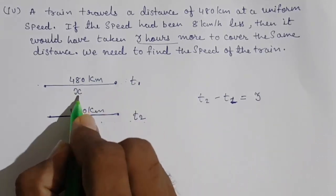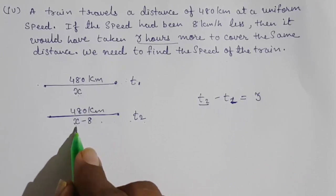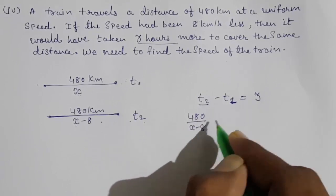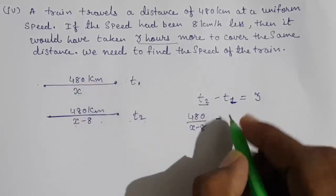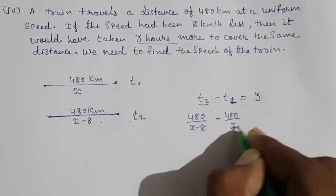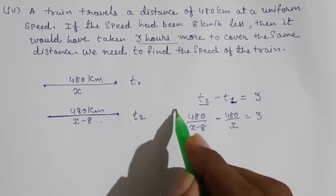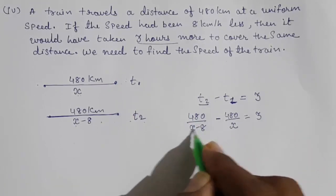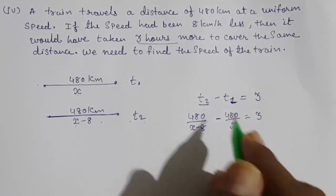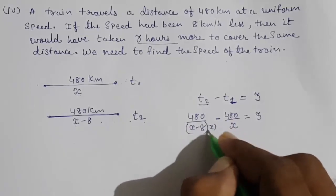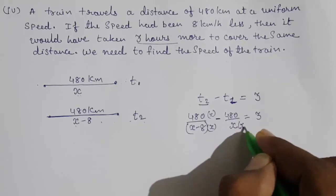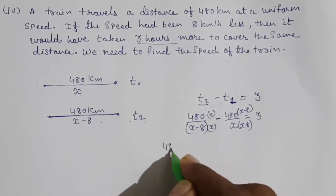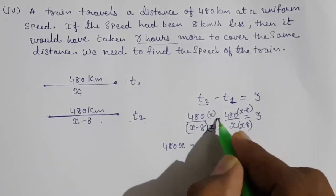Time = distance ÷ speed, so t2 = 480/(x − 8) and t1 = 480/x. The equation becomes 480/(x − 8) − 480/x = 3. To solve, take the LCM of (x − 8) and x, and multiply through: 480x − 480(x − 8) on the numerator over x(x − 8) equals 3.